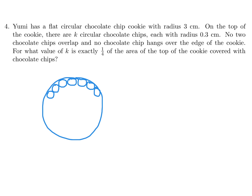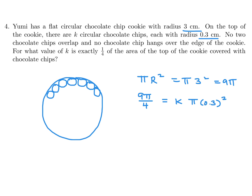They're saying one quarter of the area of the cookie is covered with chocolate chips. The area of the full cookie is pi times 3 squared, so 9 pi. We want a quarter of that: 9 pi over 4, and that equals K times pi times 0.3 squared, which is K times 0.09 pi. The pi's cancel, giving K equals 9 divided by 4 times 0.09, which is 25.